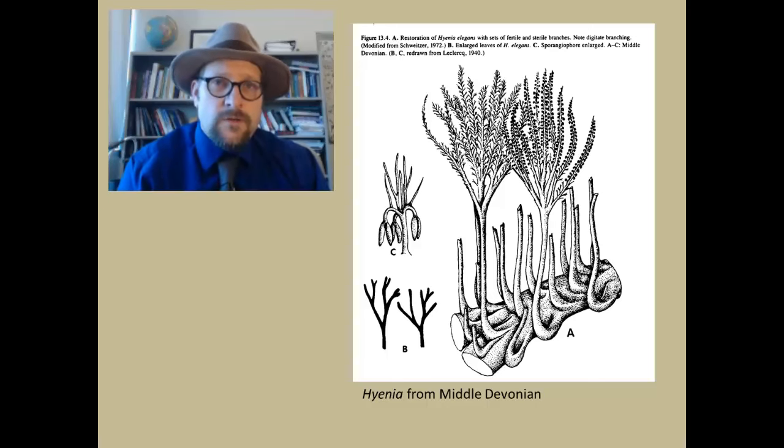In Nova Scotia along the Joggins cliffs are large hollow logs of Calamites. In some of them are preserved amazing fossils of early reptiles, which crawled into these upright hollow trunks and then were trapped and failed to escape.